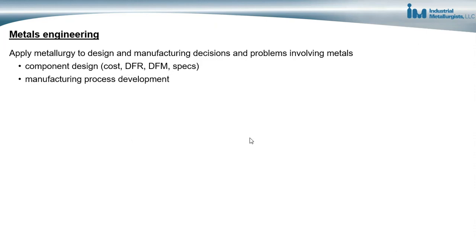The next area is helping with manufacturing process development — developing processes that are capable of continually fabricating components and assemblies that continually meet their requirements. This means setting up the manufacturing processes so that what is done to the materials results in materials that have the desired properties and shape. If they don't have the desired properties, the materials won't work as desired in the components, joints, and the overall product.